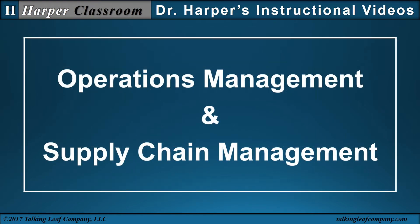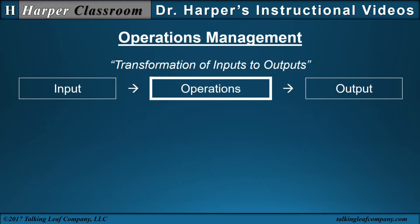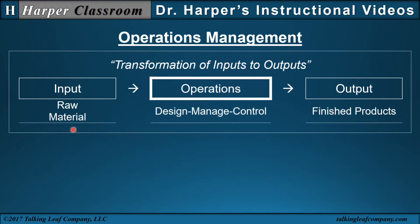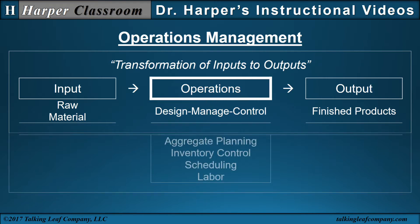Let's start by comparing operations management and supply chain management. Operations management can be described as transformation of inputs to outputs, where the inputs are raw material and the outputs are finished products. Operations could fall under the different categories of design operations, manage operations, and control operations. They also include aggregate planning, which is sales and operations planning or production planning, inventory control, scheduling, and labor.